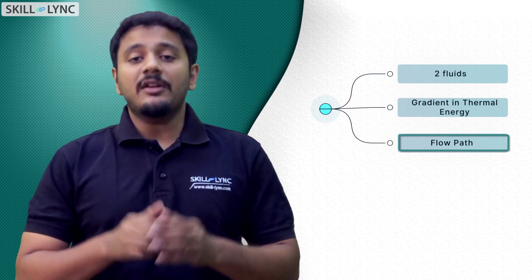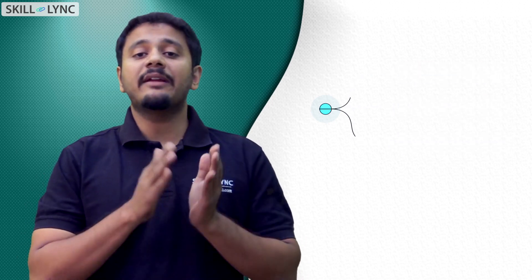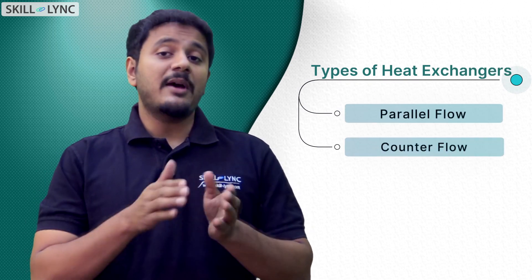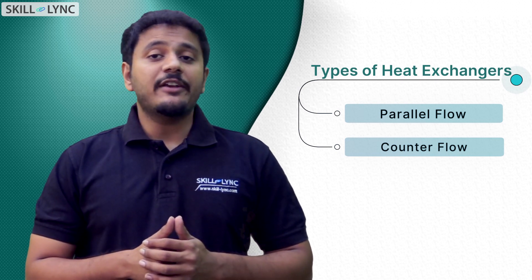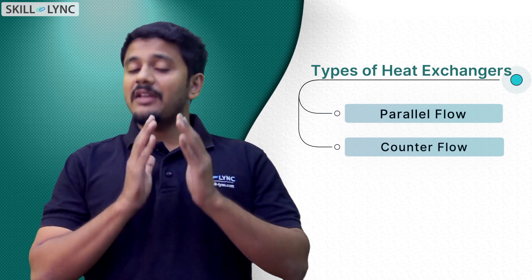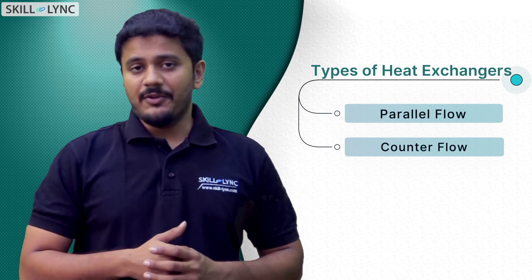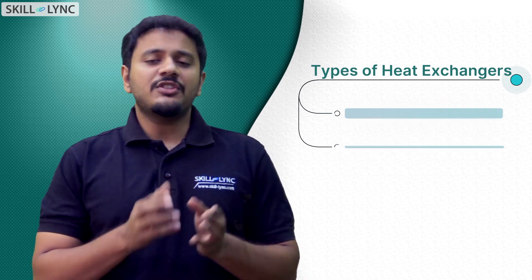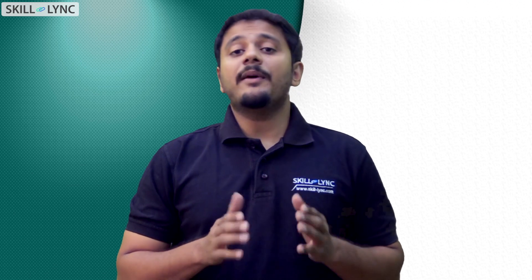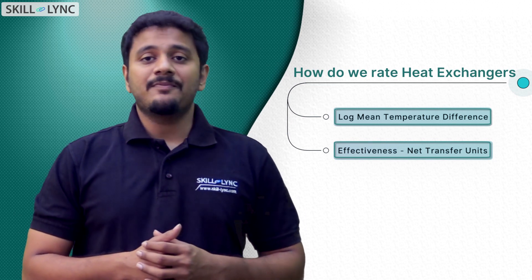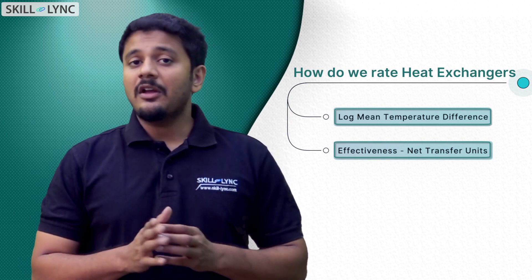Secondly, there needs to be a system which helps in the transfer of energy — this system is what engineers build and call a heat exchanger. There are many types of heat exchangers. The primary classification includes parallel flow and counter flow. In parallel flow heat exchangers, both fluids flow in the same direction; in counter flow, the fluids flow in opposite directions. From a pure thermodynamic standpoint, heat exchangers can be rated based on two parameters: the log mean temperature difference and the effectiveness-NTU method.